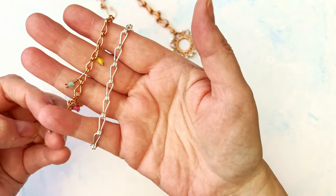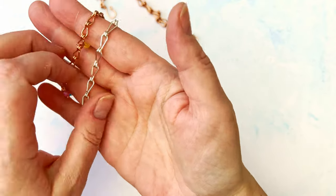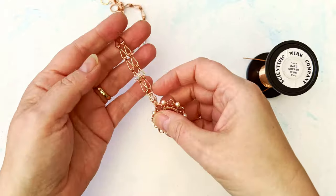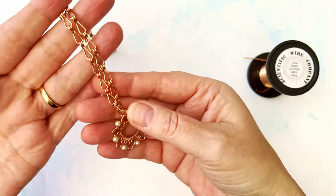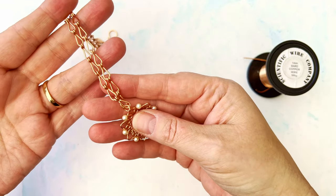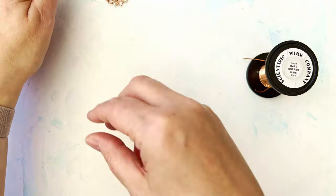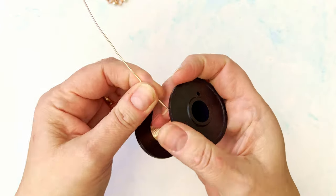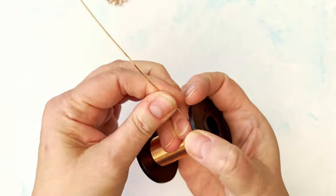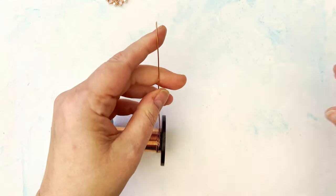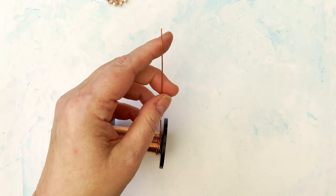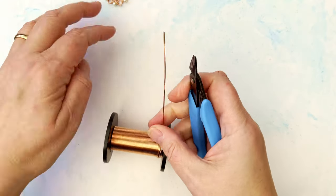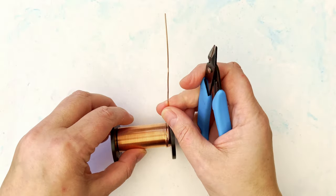I'll teach you how to make this particular size here, but then you can obviously just go ahead and have a go at making different sizes. For this particular link here, each one of them takes four centimeters of wire. Get your one millimeter copper wire or whichever wire you're using, and as always, a wee flush cut at the end for neatness.